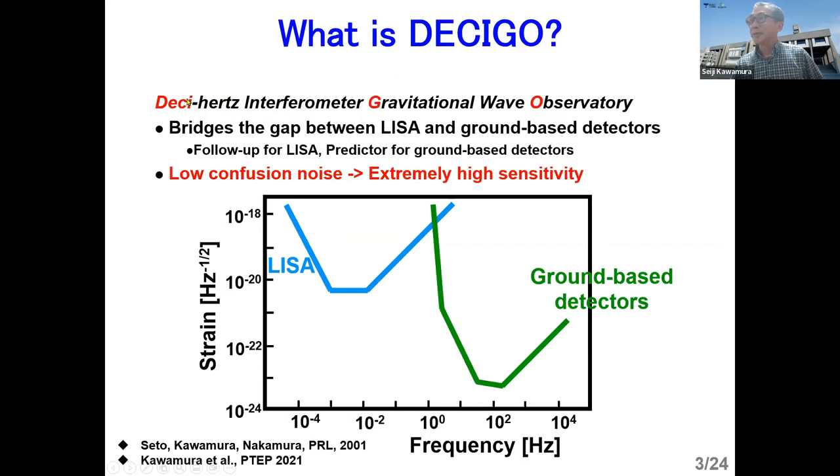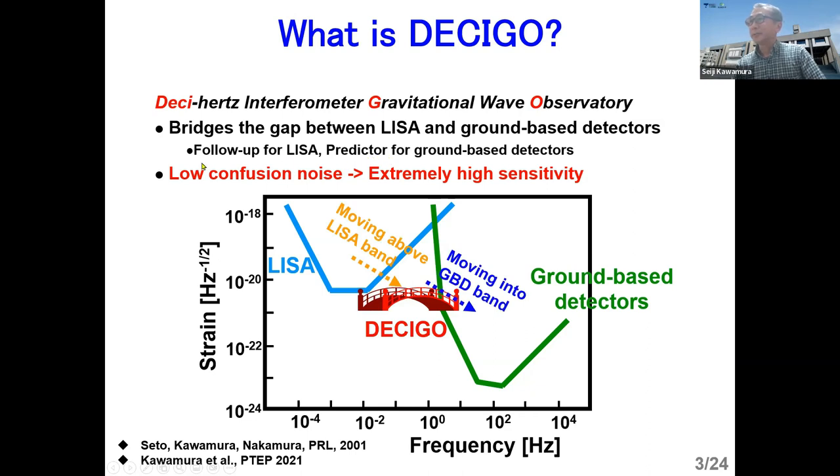So what is DECIGO? DECIGO stands for Deci-Hertz Interferometer Gravitational Wave Observatory. And like LGWA, it bridges the gap between LISA and ground-based detectors. DECIGO can play also as a follow-up for LISA and a predictor for ground-based detectors. And the good thing about this frequency window is the low-confusion noise limit due to white dwarf, double white dwarf binary, because it cannot sweep above 0.1 hertz. So around here, we can have extremely high sensitivity.